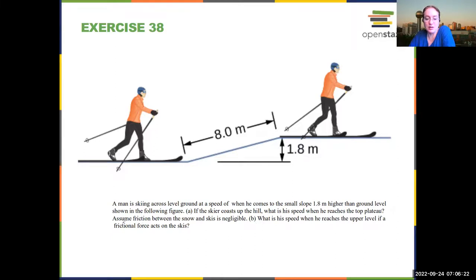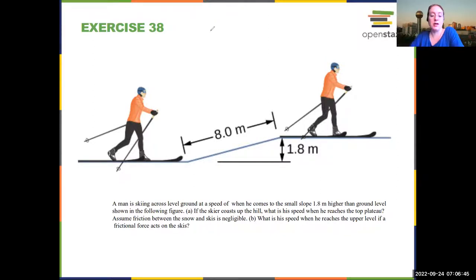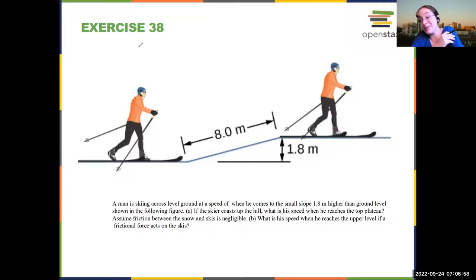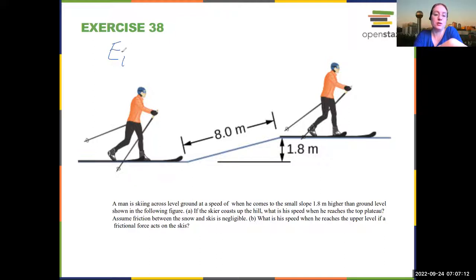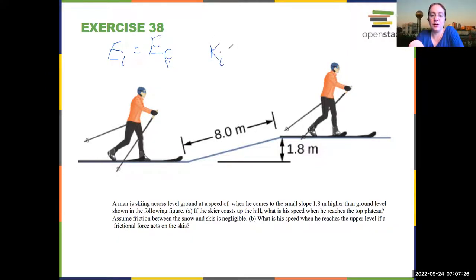A man is skiing across level ground at some speed when he comes to a hill of small slope. If the skier coasts up the hill, what is his speed when he reaches the top plateau? Assume friction is negligible. Coasting means he is not changing his kinetic energy by his own effort. The problem strategy for energy conservation: write initial energy equals final energy. We have initial kinetic energy plus initial potential energy equals final kinetic energy plus final potential energy. We set the initial potential energy to zero — choosing our zero at the starting position.